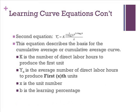And here's the second equation. This equation describes the basis for the cumulative average curve. k is the number of direct labor hours to produce the first unit. Y sub x is the average number of direct labor hours to produce the first x units. x is the unit number, and b is the learning percentage.